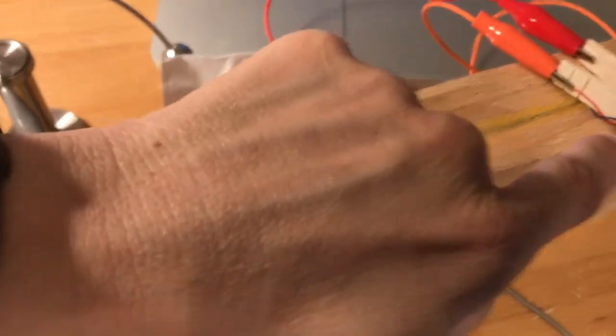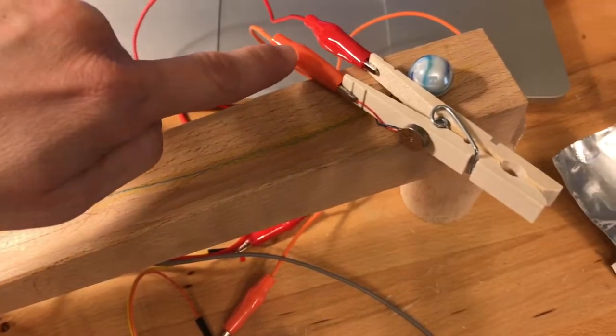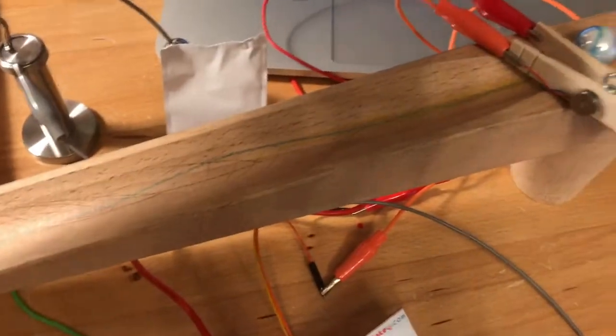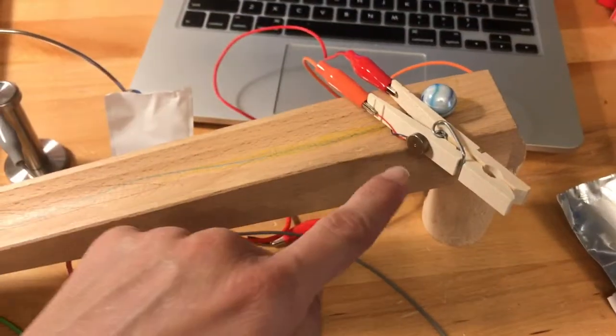So one end is connected to key out on the back of the Makey Makey, and one is connected to earth, and then that makes the motor start.